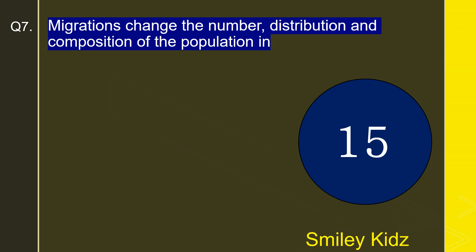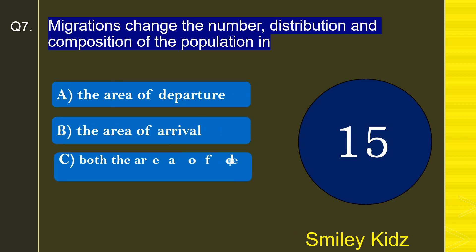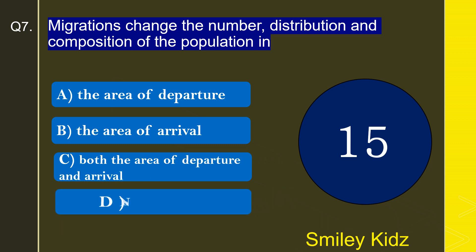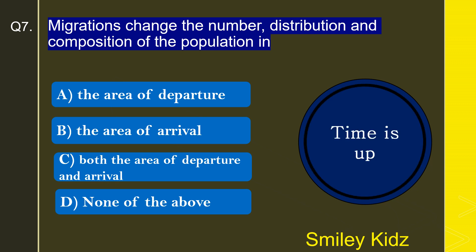Moving to question number 7: Migrations change the number, distribution, and composition of the population in — the area of departure, the area of arrival, both the area of departure and arrival, or none of the above? The correct answer is both the area of departure and arrival. Migrations change the number, distribution, and composition of the population in both the area of departure and arrival.